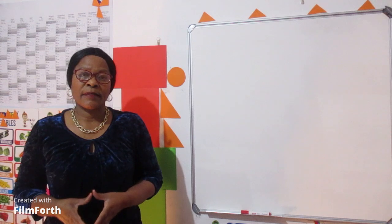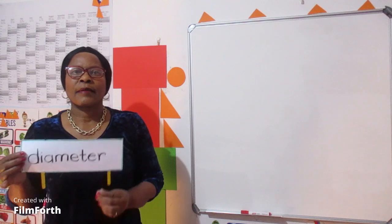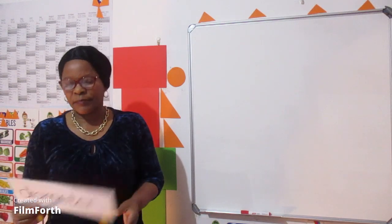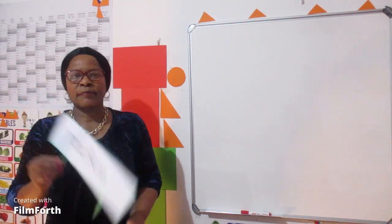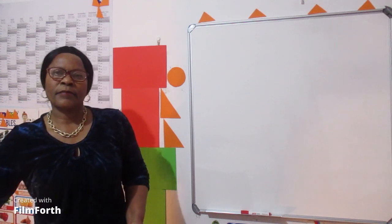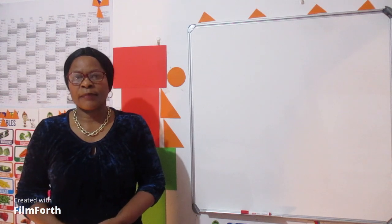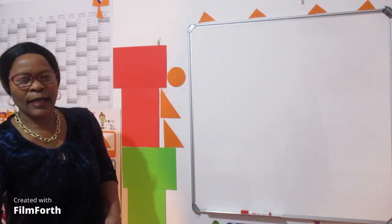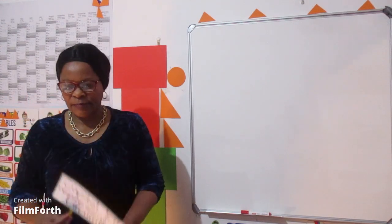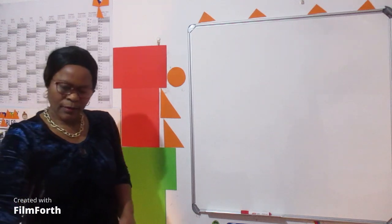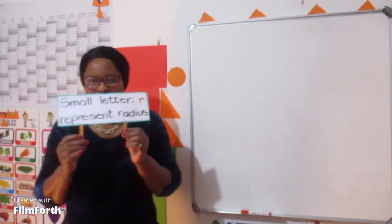Keep in mind the following properties of a circle: one — diameter, two — radius, three — circumference. Those are the properties of a circle. Capital letter C represents circumference, small letter r represents radius, and small letter d represents diameter.